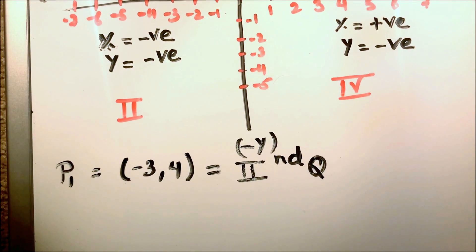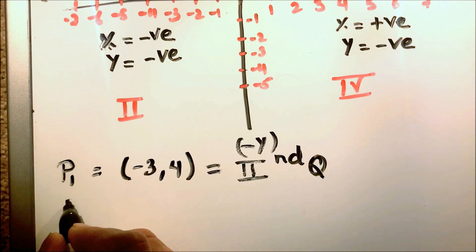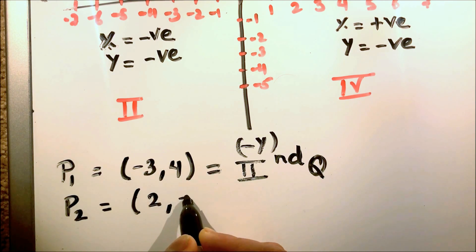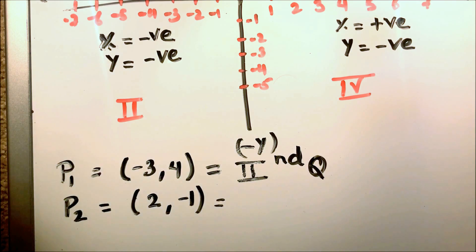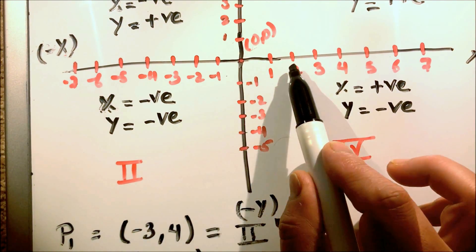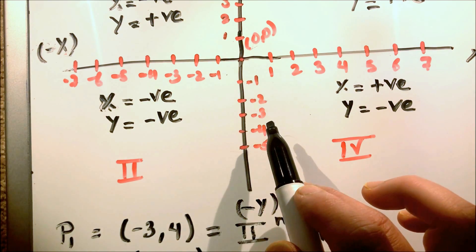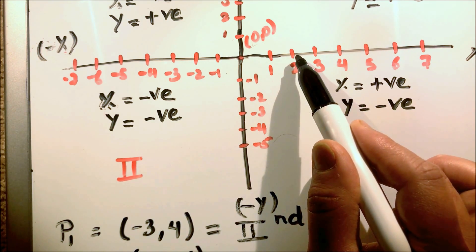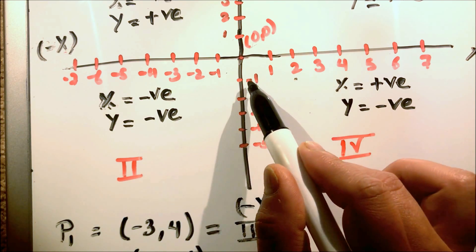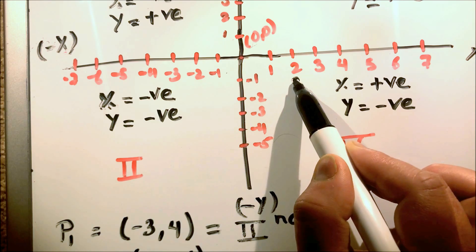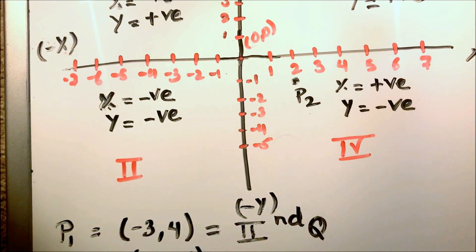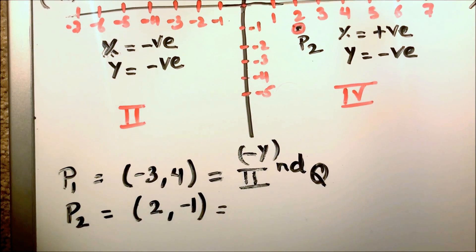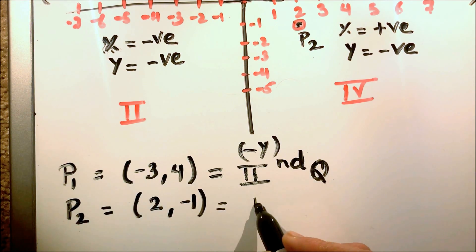Now, if we have another point P2 with coordinates two and negative one, our x distance is positive so we go on the right-hand side, and negative one means we are going down. So we move two units horizontally and one position down. This is our point P2, which is in the fourth quadrant.